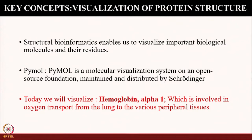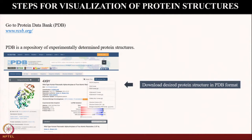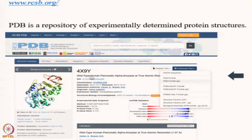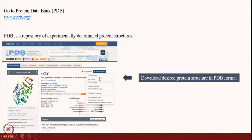As we all know, hemoglobin is an important molecule which is present in the blood and it is an oxygen carrier. So we will first go to the protein data bank. The protein data bank is an open database for protein structures which are experimentally determined. We can go and search for any protein and it will give a unique ID, also known as the PDB ID of the protein. After searching the protein of interest, in the download options you can see various formats of the protein structure.